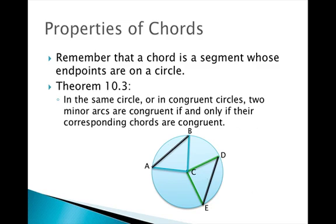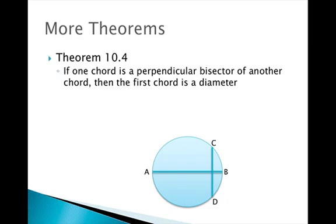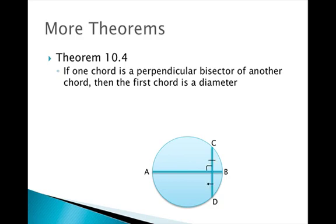Theorem 10.4 states: if one chord is a perpendicular bisector of another chord, then the first chord is a diameter. So if chord AB is the perpendicular bisector of chord CD — meaning it's perpendicular to CD and bisects it into two congruent segments — then AB must be a diameter. That means it passes through the center of the circle.